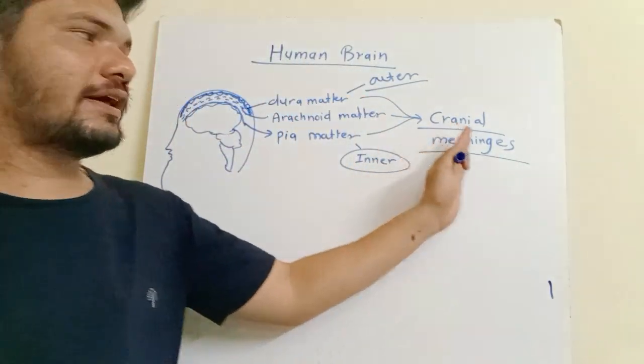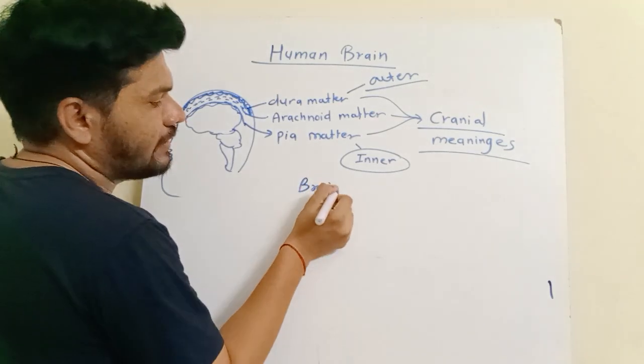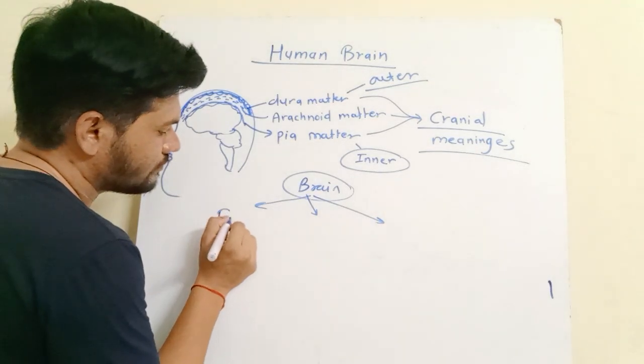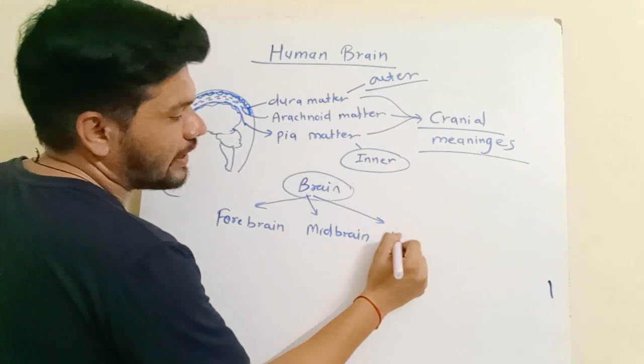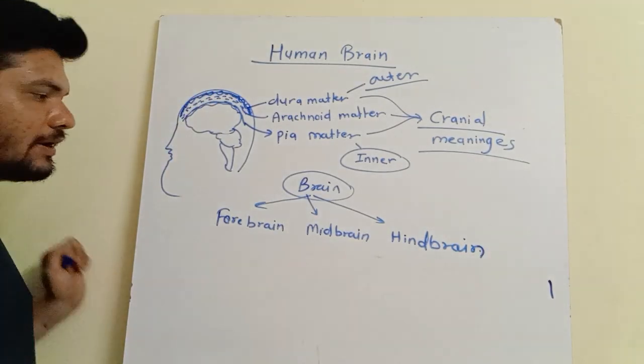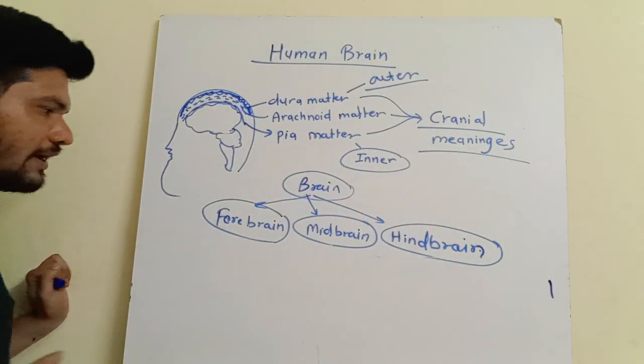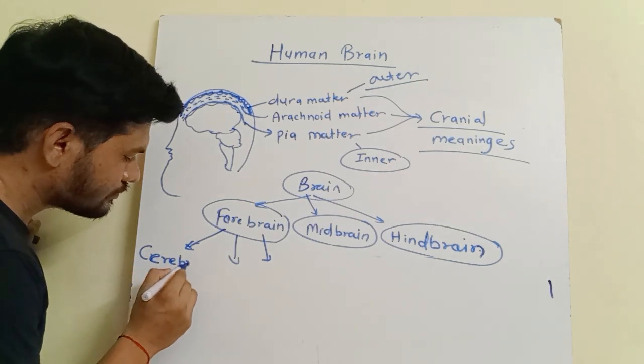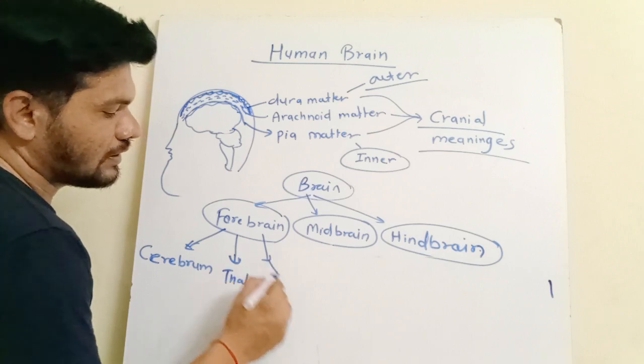If you divide your brain, the brain can be divided into three different parts called forebrain, midbrain, and hindbrain. Your forebrain is the major part of your brain. It is also divided into three different regions: cerebrum, thalamus, and hypothalamus.